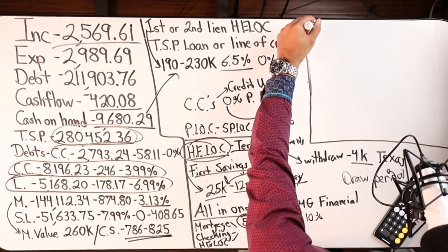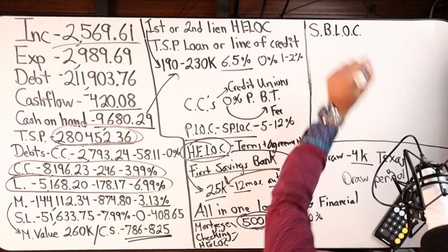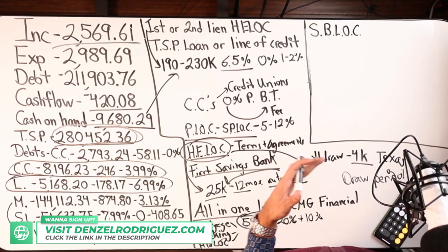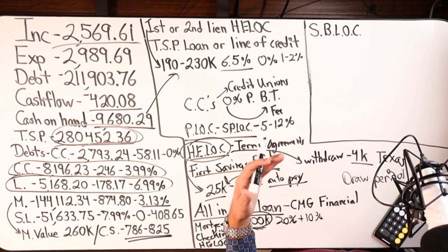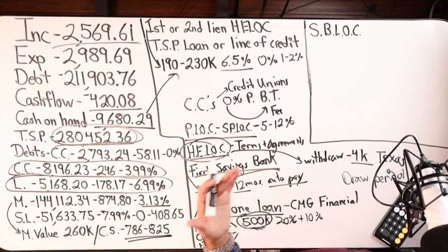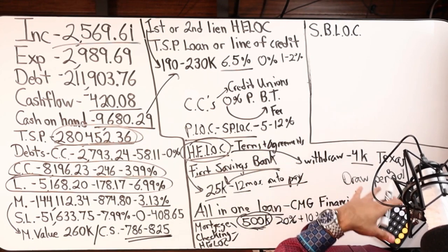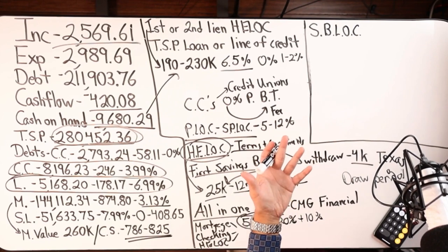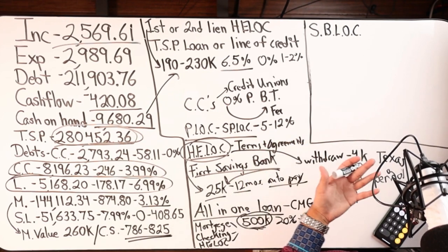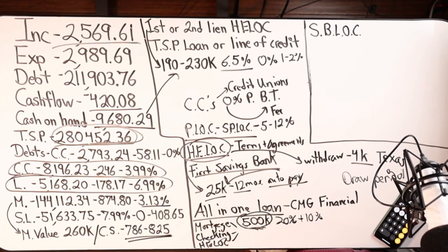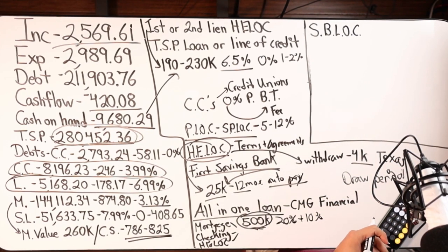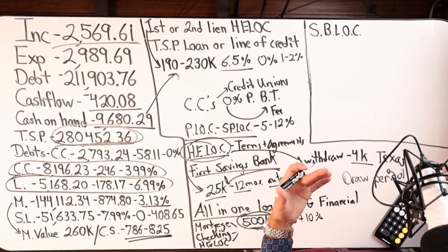Then there's the asset-backed or securities-backed line of credit. Two banks I've come across: M&T Bank and Bancorp. Those are the only two I've seen so far that specialize in offering these tools. If you have your accounts with Edward Jones, they may also offer credit lines against your assets — worth looking into. The nice thing about a securities-backed line of credit is I can have my asset continuously growing and then take a portion of it, use it to do velocity banking, attach a checking account, and have money flowing in and out.